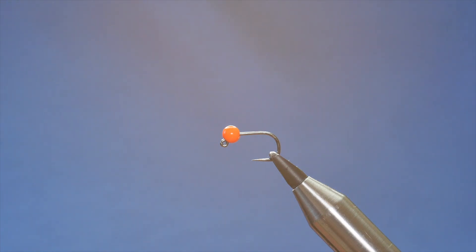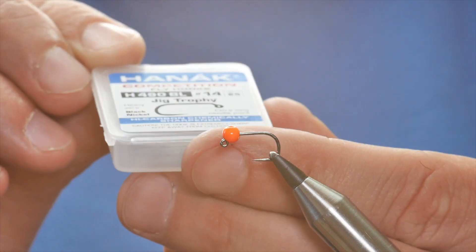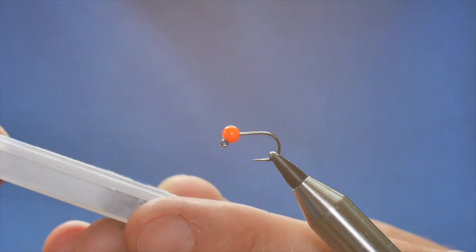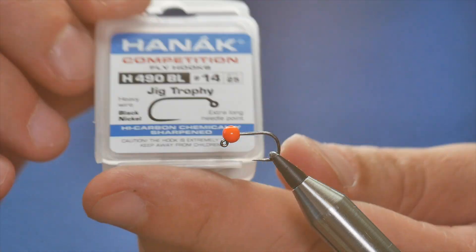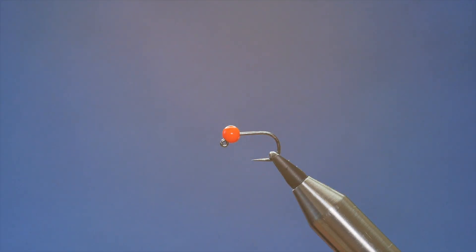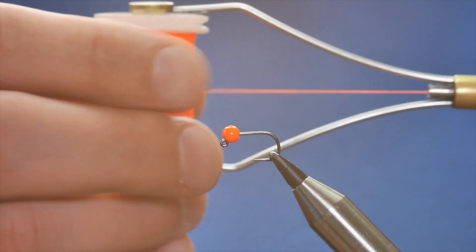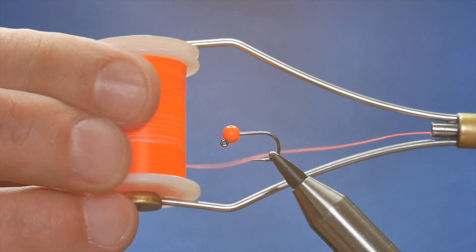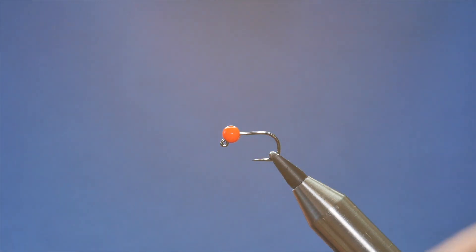In the vise is a Hanak Competition H490. This is the Jig Trophy hook and it is a heavy wired, quite a wide gate jig hook. And the thread I'm going to be using today is the Vivas A-Tow, a bright orange thread, E16.